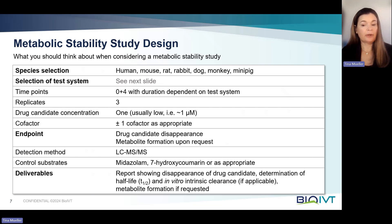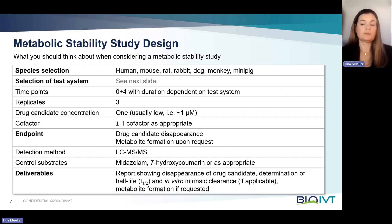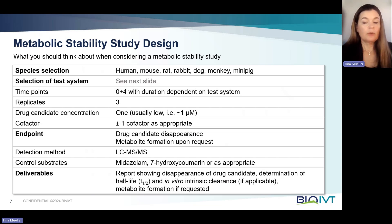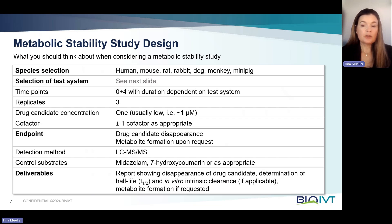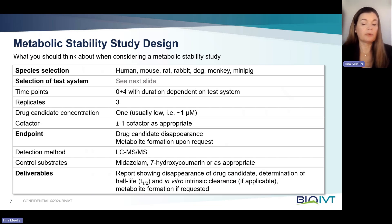Normally just one drug candidate concentration is tested, at a low concentration such as one micromolar. Depending on the test system — for example in liver microsomes — a cofactor needs to be added. What cofactor is used depends on the type of enzyme class being evaluated, which in turn depends on the structure of the drug candidate. If the main focus is on CYP enzymes, that will be NADPH. If the drug candidate might be a substrate for UGTs — for instance if it contains a phenolic moiety — then UDPGA (UDP glucuronic acid) or a cofactor mix is more appropriate.